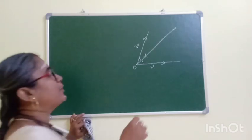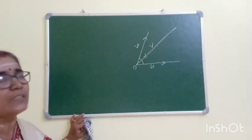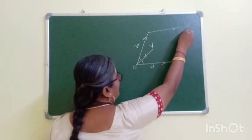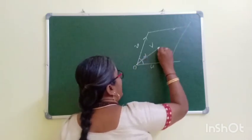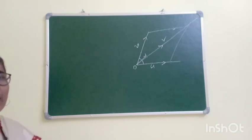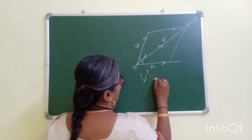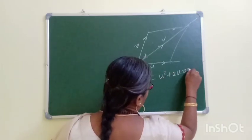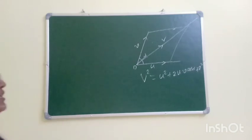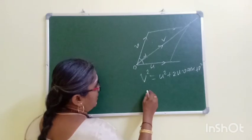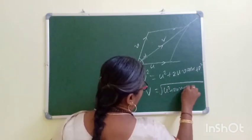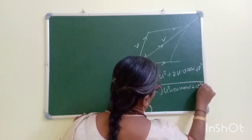Now, if we look at the result — the parallelogram is the result. If we look at this parallelogram, the diagonal is the result. We will have a derivation formula: V² = u² + 2uv cosα + v². This is small v and capital V. Capital V is the resultant. Capital V = √(u² + 2uv cosα + v²).